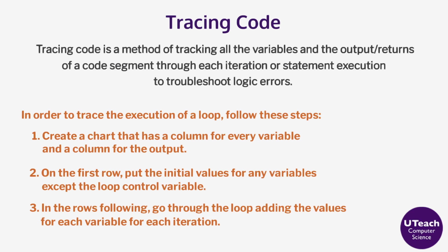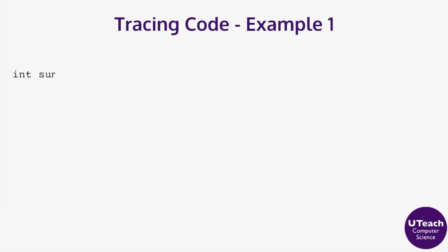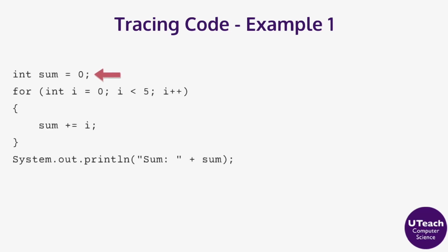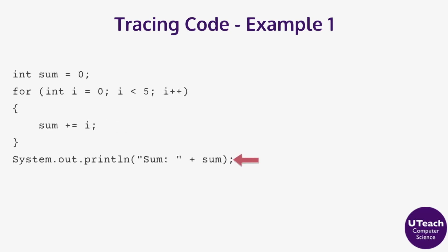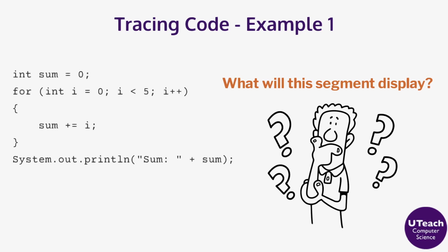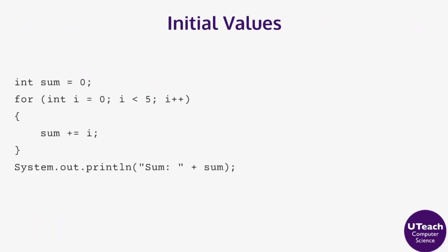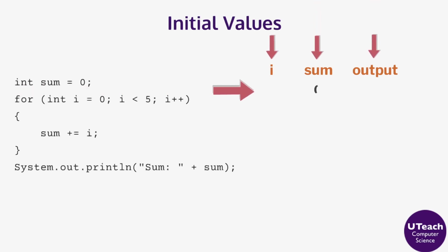In this video we will walk through tracing two different code segments that use iteration. For the first example, sum is initialized to zero, the loop control variable i is initialized to zero, the conditional checks to see if i is less than 5, and i is incremented by 1. Inside the loop, the value of sum is updated by the value of i. After the loop, the value of sum is displayed. The chart for this tracing will have columns for i, sum, and the output.